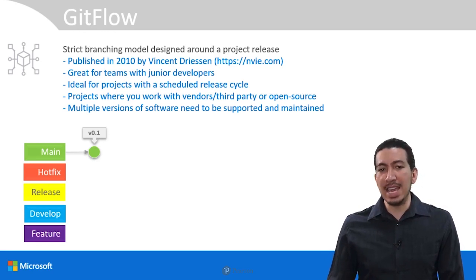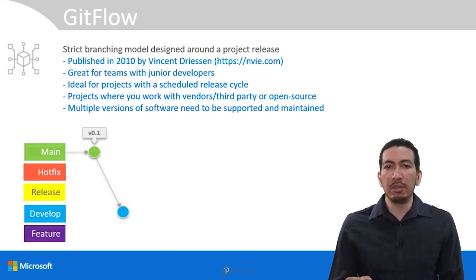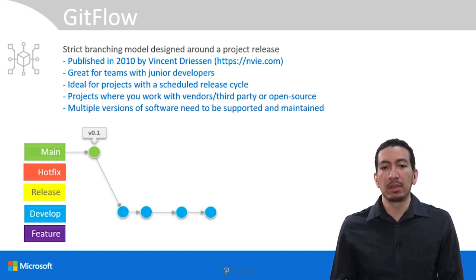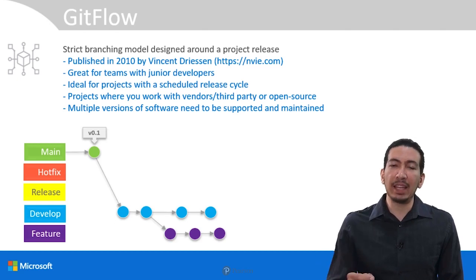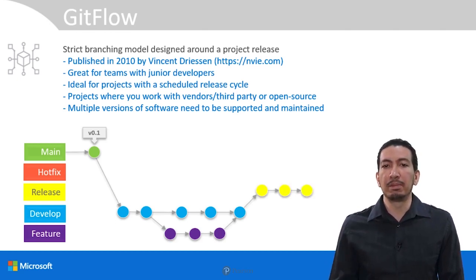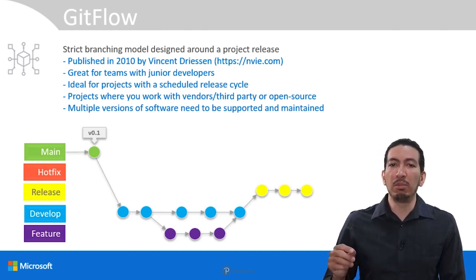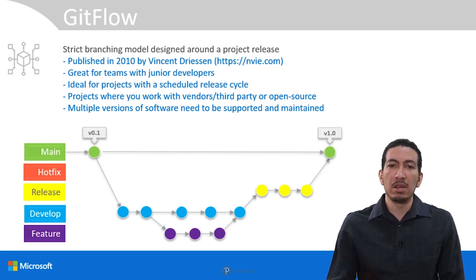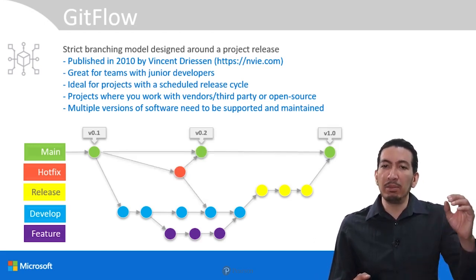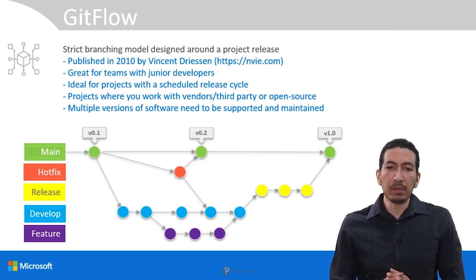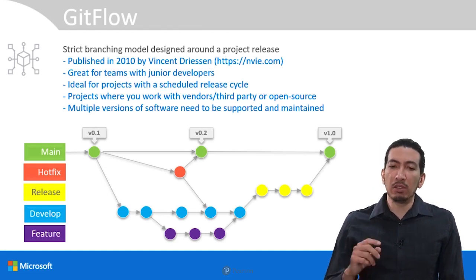It starts with the first commit in the main branch, which is followed by the creation of the development branch. From there we start making new commits for changes, as well as creating new branches for features, which are then merged back into the development branch. After these changes are completed, a new branch called release is created, where you will test these changes before merging them into the main branch. You can also see that we created a hotfix branch, which was merged back into the main branch as well as the development branch. There are also several tags here: v0.1, v0.2, and v1.0.